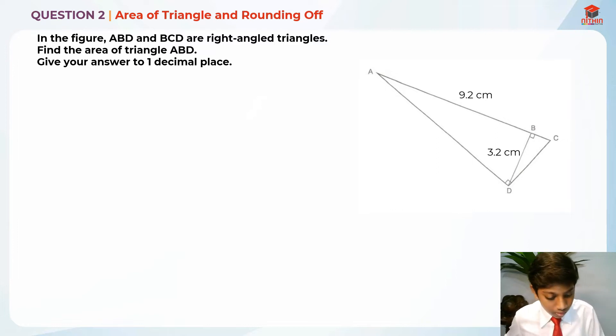So this is where the rounding off comes in and this is where we find the area of triangle. So where is triangle ABD? It is over here. If you look carefully, it is over here.